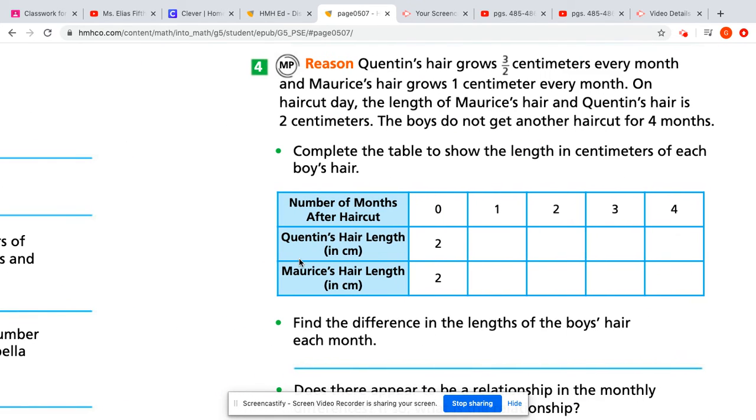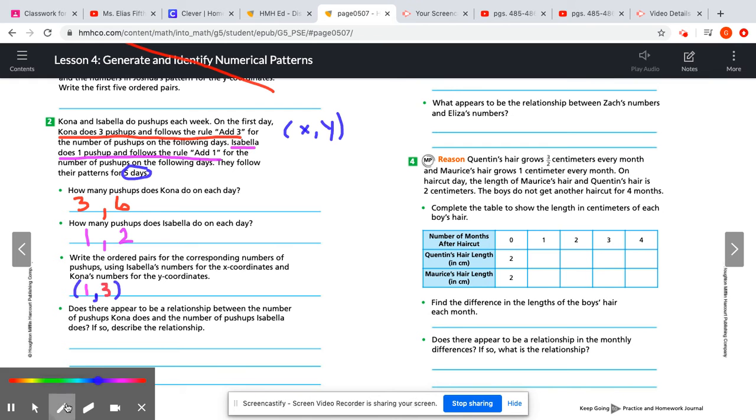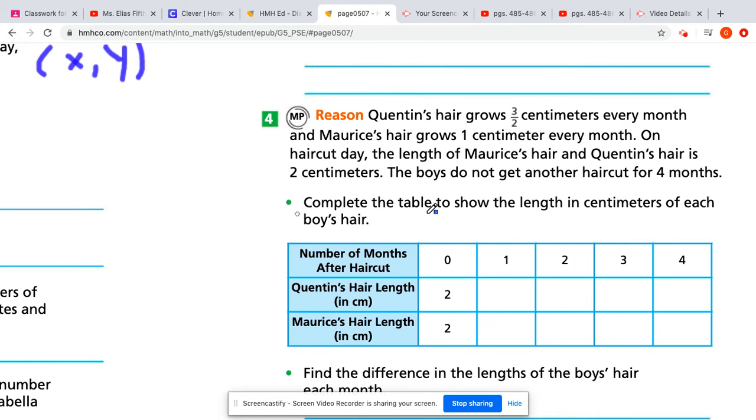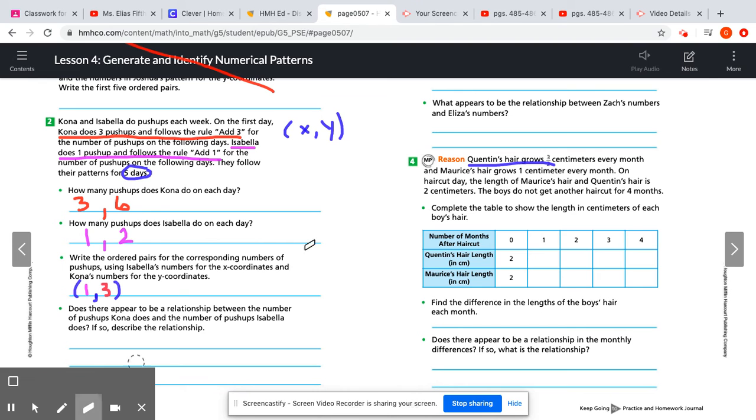Over here is something I did want to talk about because they include a fraction in this one. Now, it's not something to be intimidated by. We have the fraction three halves for Quentin's hair. So every month, Quentin's hair grows three halves centimeters and Maurice's hair grows one centimeter every month. So when we look at where they both start, they both start at two centimeters in the beginning. They both get a haircut. They have two centimeters worth of hair. And then they start growing their hair for the next four months.